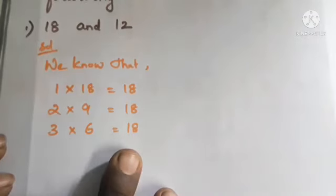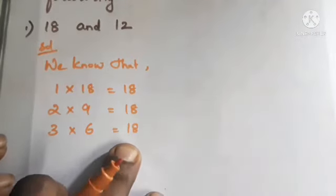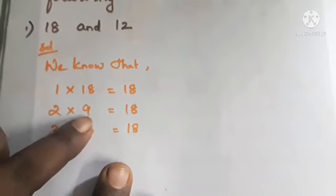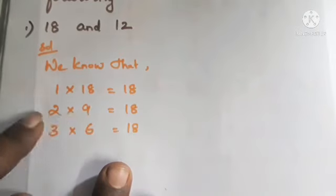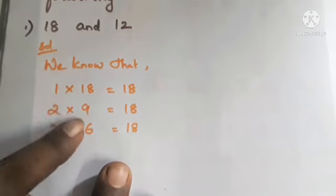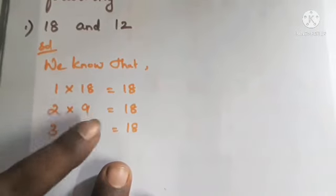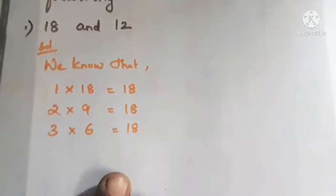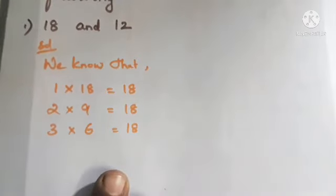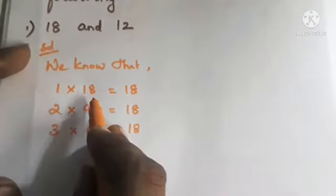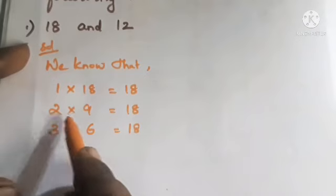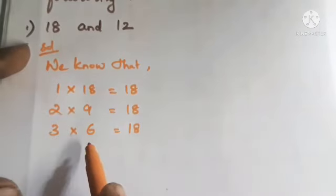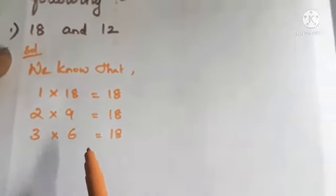The 9 times table gives 9 into 2 as 18, which is the same as 2 into 9 — already written. So the factors of 18 are: 1, 2, 3, 6, 9, and 18.